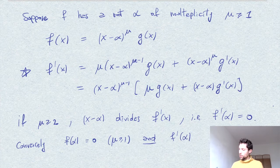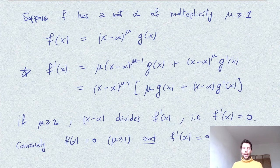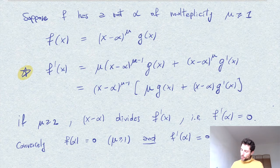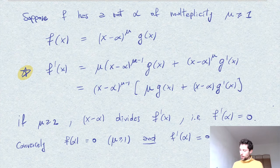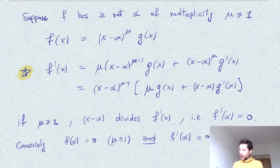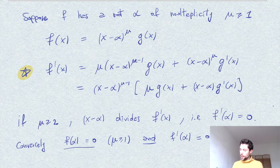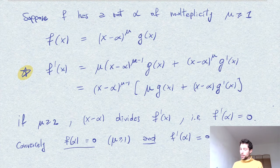so the derivative also has zero at alpha, and from our expression here, which is valid whenever f has root, just like in this case,